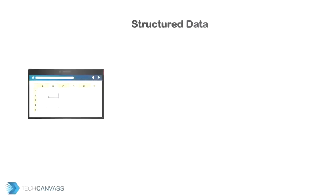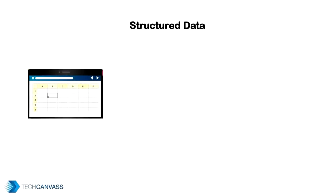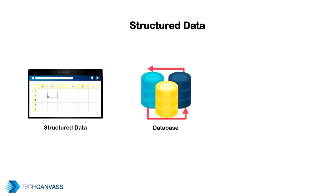Structured data is very organized and it fits nicely into rows and columns, like data in Excel. Think of a sales database where the customer, product, and cost information is stored, each row containing one unique purchase. It has a fixed format and is generally stored in a database. It can be easily analyzed using SQL, that is Structured Query Language, where we write queries to analyze the data.